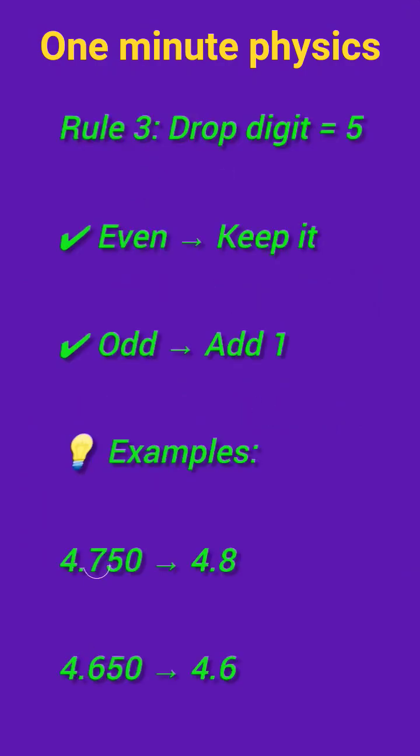See the next rule: if the digit you drop is equal to 5 and its preceding digit is even, then it should be kept the same. If its preceding digit is odd, then it should be rounded up by 1. See the examples for clarity.